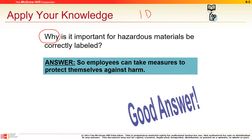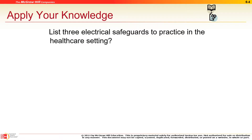List three electrical safeguards to practice in the healthcare setting. Make sure extension cords are anchored down so they don't cause a hazard. Inspect your equipment, make sure wires aren't frayed, and things are grounded — we mentioned three-prong versus four-prong cords.